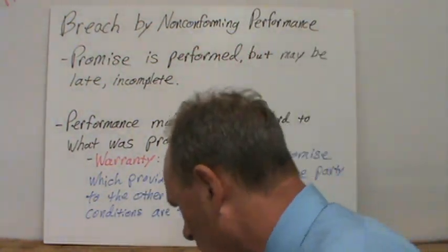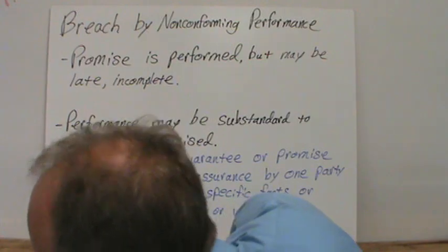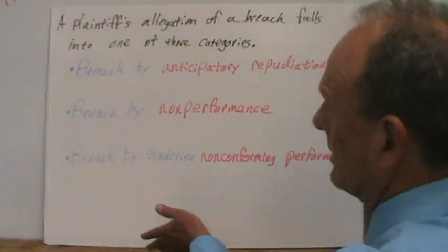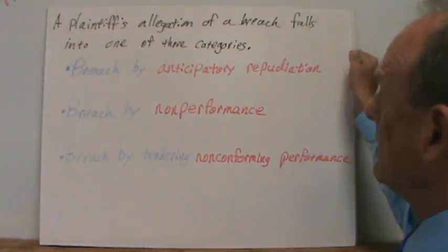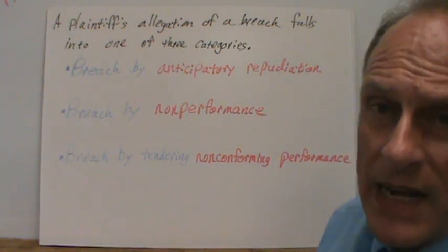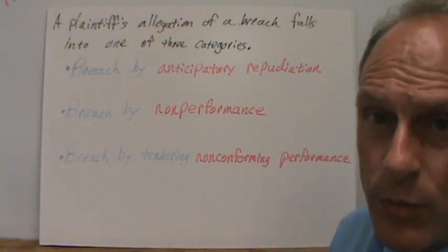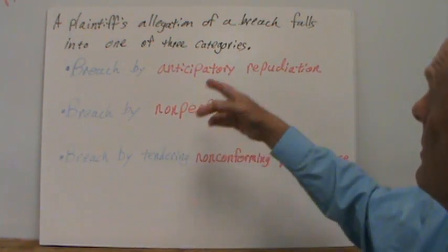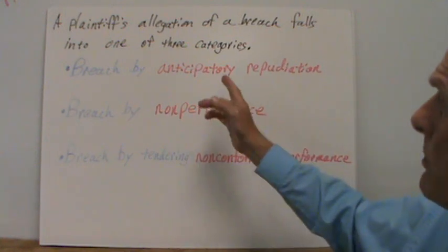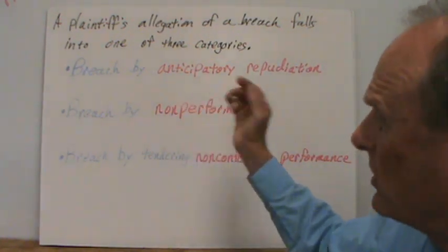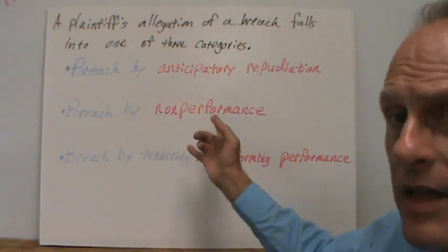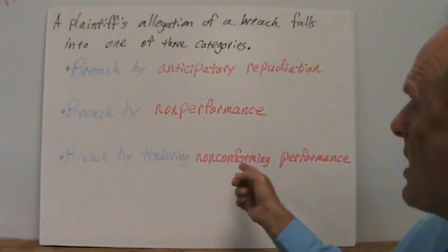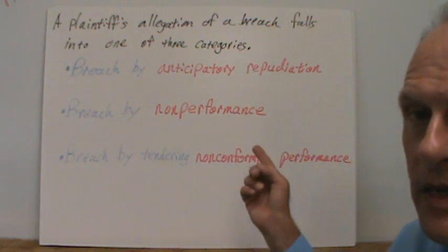To sum it all up, a plaintiff's allegation of a breach is going to fall into one of these three categories: breach by anticipatory repudiation, breach by non-performance, or breach by tendering a non-conforming performance.